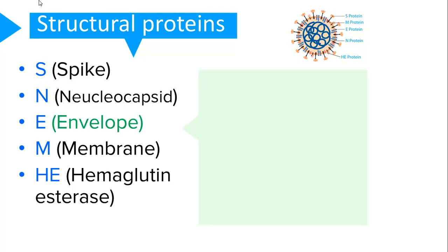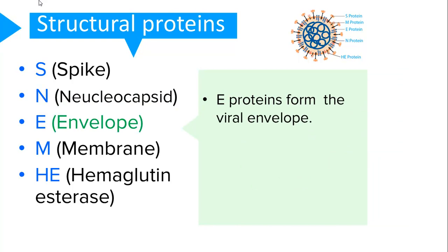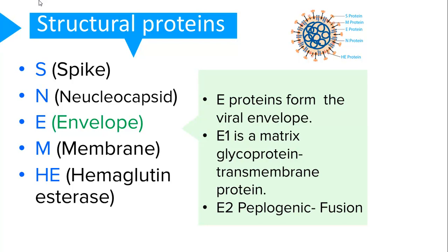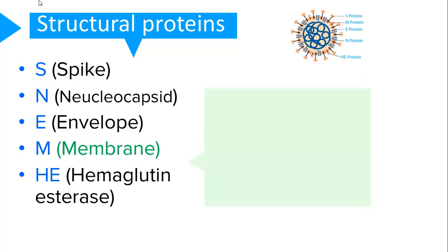The envelope protein forms the viral envelope, whereby we have two types of envelope proteins: the E1 and the E2. The E1 protein is a transmembrane matrix protein, and the E2 is a peplomeric glycoprotein which is important in the penetration into the human cell.